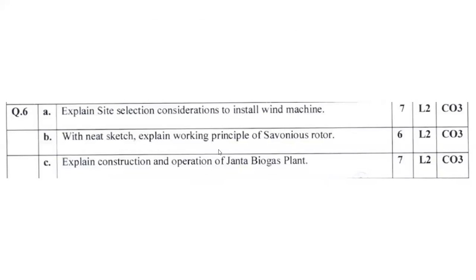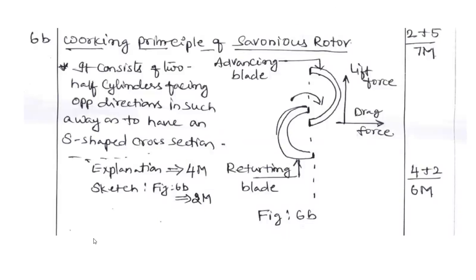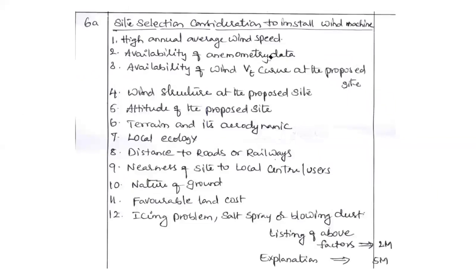6b: With a neat sketch explain the working principle of Savonius rotor. It is better to draw the schematic diagram like this. Here advancing blade, the lift force, then returning blade. All the things you can mark very clearly. Remember diagram has certain weightage. It comprises of two half cylinders facing opposite direction such as like this, on the S-shaped cross section. Explanation carries four marks, sketch carries two marks. Like this they divided the marks. You can write the answer in this fashion. Hope you can manage it. Kindly go through once again, it will be useful for you definitely.